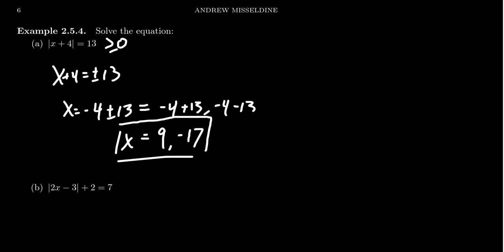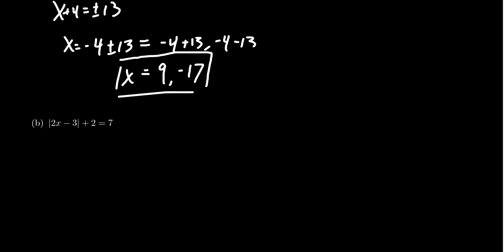And, you know, if we wanted to and we ought to, we should plug those back into the original equation and check what happens. 9 plus 4 is 13. Its absolute value is 13. Negative 17 plus 4 is negative 13, whose absolute value is 13. It checks out.